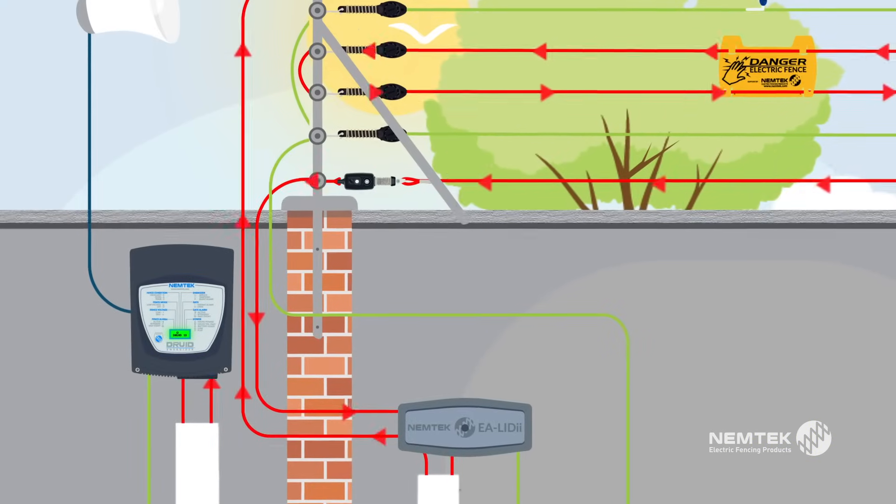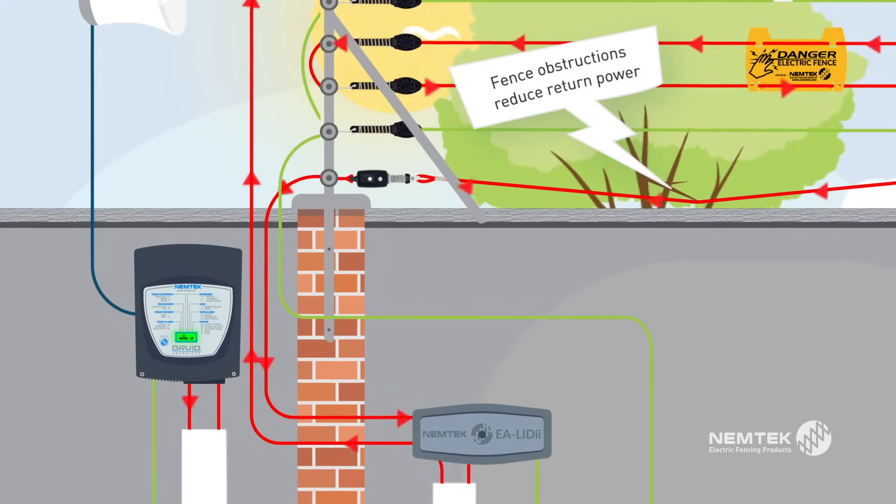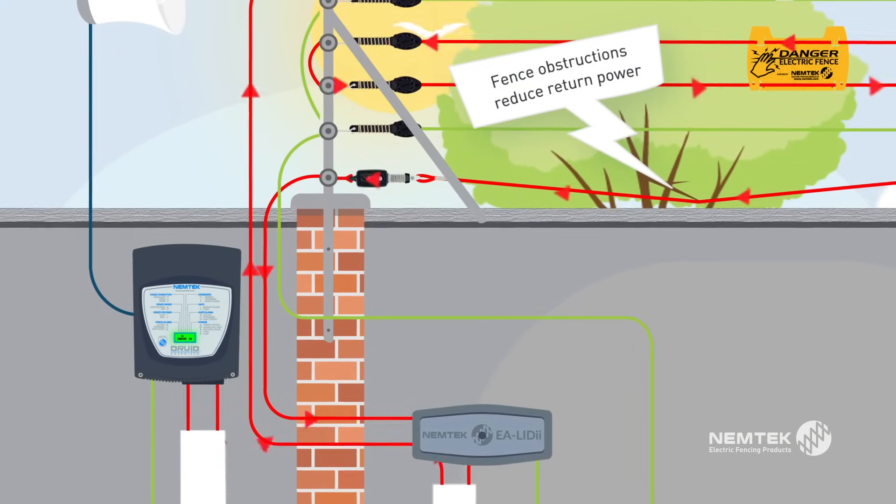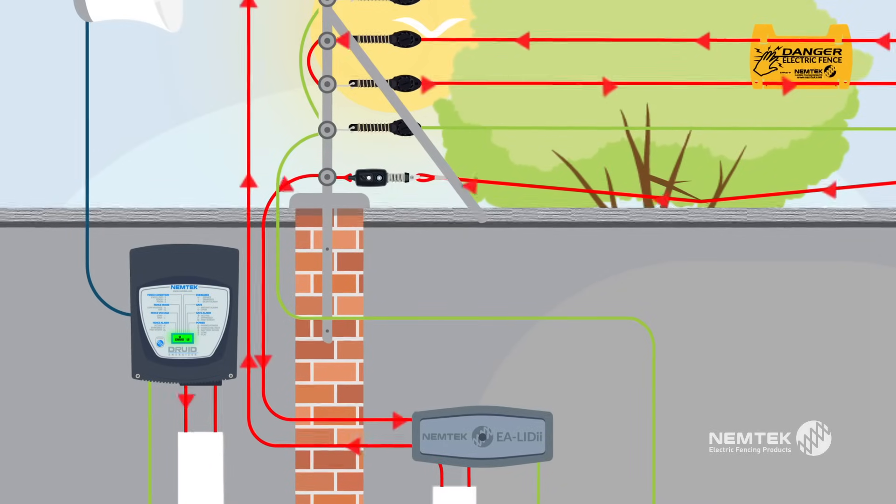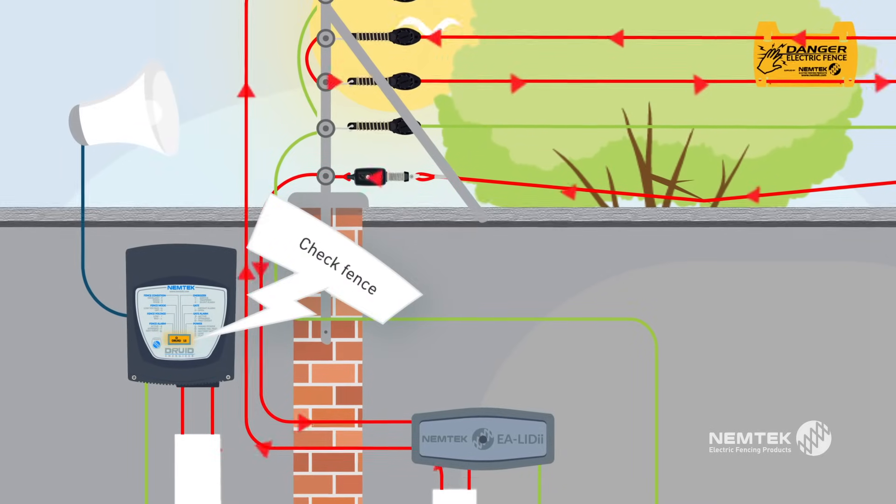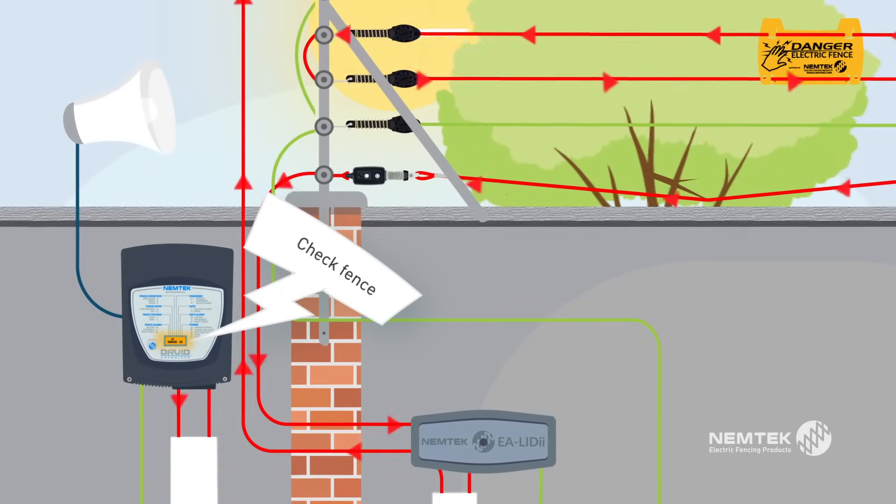If the high voltage pulse is interrupted along the fence by an object like a tree branch, there is substantial loss. The energizer display will change to orange, which indicates you should check the fence and remove any obstructions.